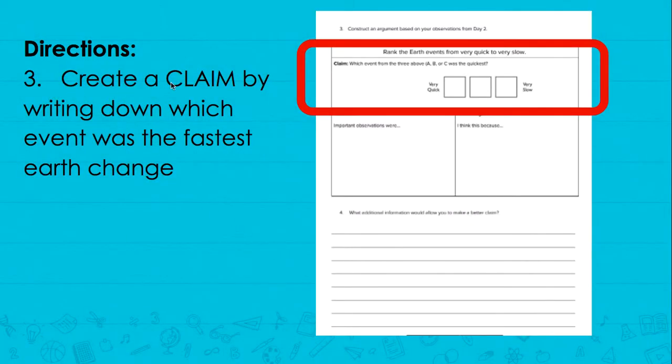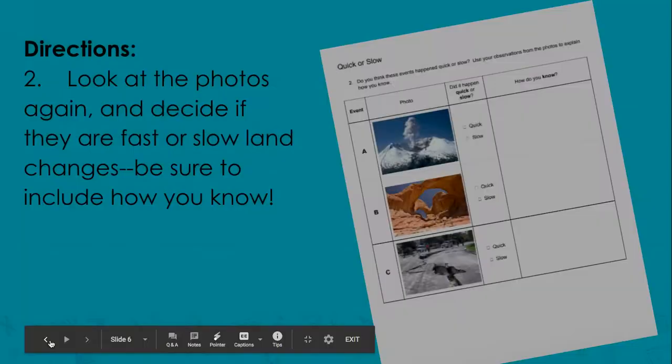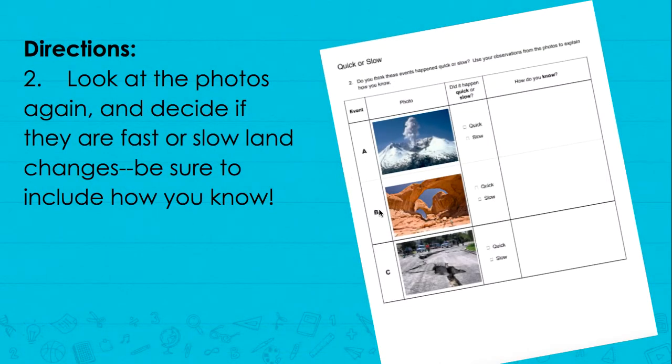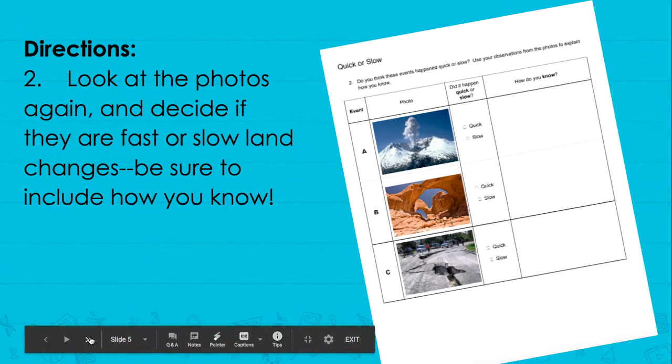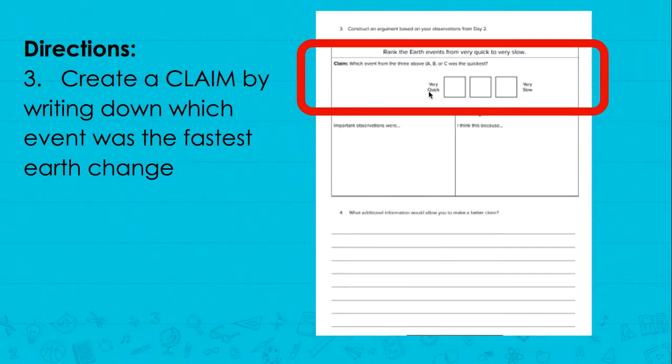Step three: you're going to create a claim, which is kind of like almost an opinion, by writing down which event was the fastest earth change. So each of the earth changes had letters next to them, A, B, or C. You're going to write them in order from the slowest to the fastest. So if you think that B was the slowest, you're going to put B in this box.